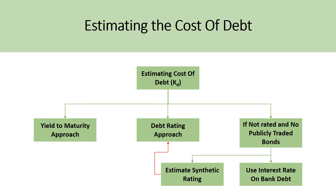To summarize, the four methods to calculating the cost of debt are: the yield to maturity approach, the debt rating approach, estimating the synthetic rating and then applying the debt rating formula, or using the interest rate on bank debt. I hope this video was really helpful. If you have any questions or didn't understand some of the slides, please comment below and I'll get back to you as soon as possible. Please like and subscribe — I really enjoy making these videos and I look forward to helping out more people soon.